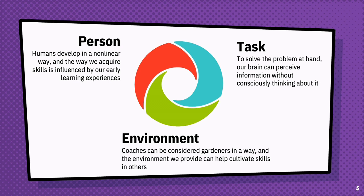If we want to understand how skill acquisition works, we need to see it from these three perspectives at the same time. If we only observe or only train from one perspective, the skills we develop may not be what we intended. When we say person, we mean each individual develops in a non-linear way at their own unique rate, and our skills are influenced by our early learning experiences. When we say task, this refers to solving the problem at hand, such as how to score the next run or take the next wicket. Our brains can actually perceive the information we need to solve that task without any conscious effort.